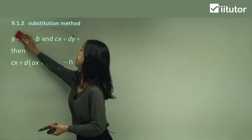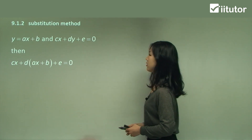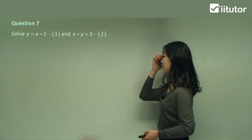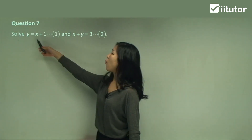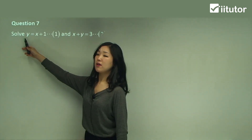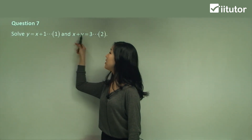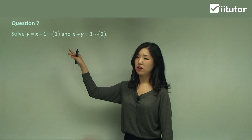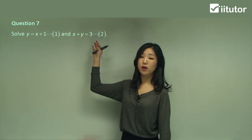I'll show you how to do it by looking at the next question. Question 7. See how here y is the subject — y equals x plus one. But in the second equation, y is not the subject; it's x plus y equals three.